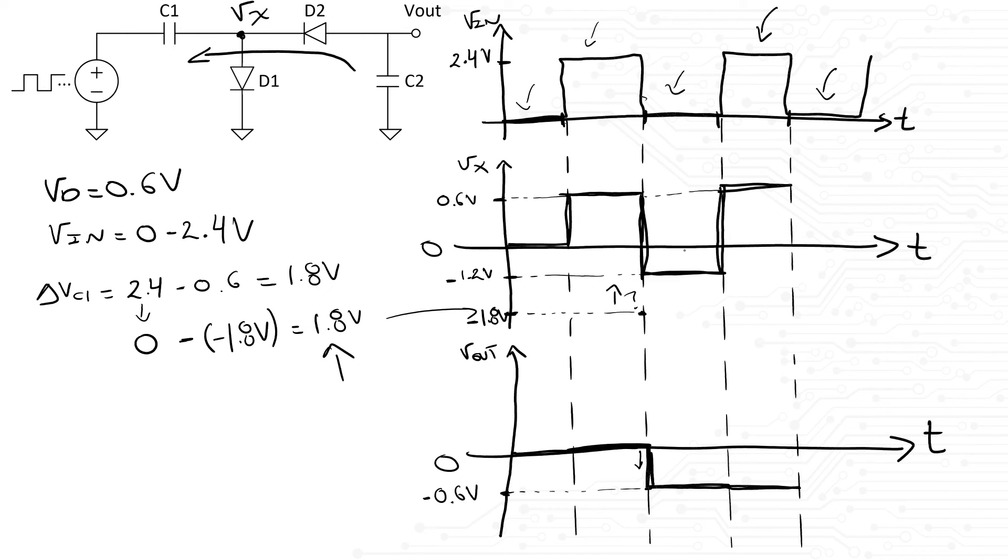We already explained a few moments ago that everything happens instantaneously, since everything is assumed to be ideal. Therefore, we know that on this cycle Vx will settle to negative 1.5 volts and Vout will settle at negative 0.9 volts. And you can see a pattern here.